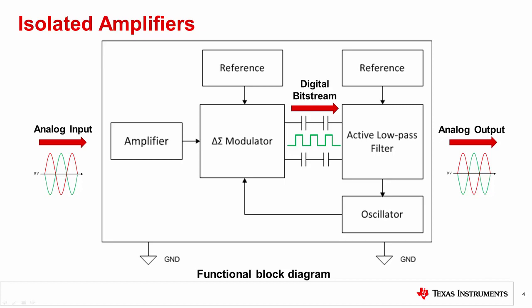The bit stream is processed by an analog filter on the low side of the isolation barrier and presented as a differential analog voltage at the output. Texas Instruments Capacitive Isolation Technology offers two different types of isolation barriers: basic and reinforced. Basic isolation is implemented with a single capacitive barrier, while reinforced isolation uses two capacitive isolation barriers in series. For more information on types of isolation, please check our Basic vs. Reinforced Isolation Precision Labs video.